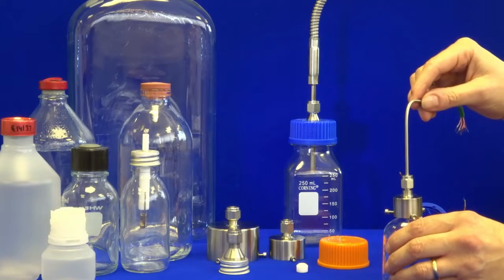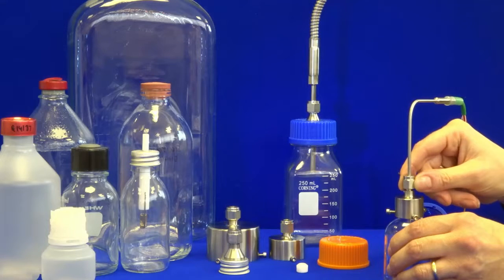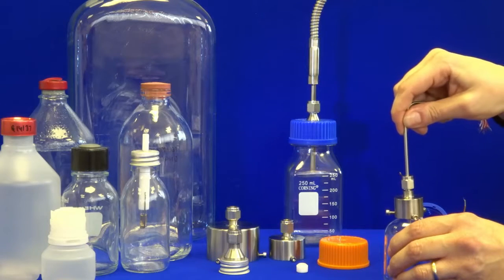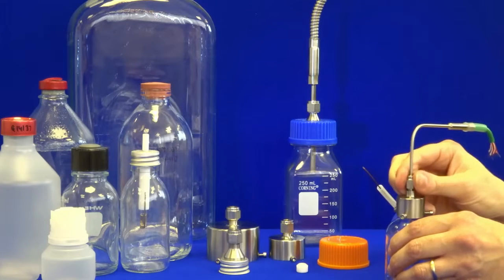Here we have a 3mm OD probe. Again we have a Teflon olive inside. We can alter the immersion length of the probe and then tighten the fitting.